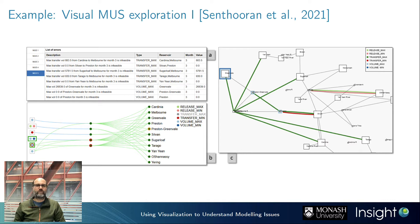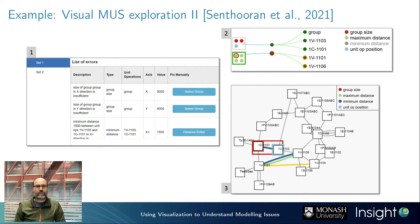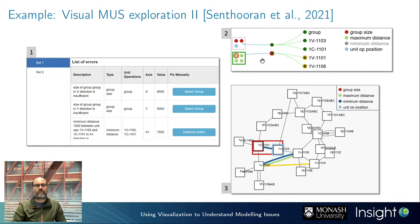Here's another version of the same tool for a different application — a 2D packing problem with constraints such as minimum and maximum distances between components. Again there's a textual representation in language the engineers would understand, and a graphical representation capturing an overview of the MUSs. This translates from solver-level unsatisfiability into a very high-level graphical and textual representation that end users would understand.